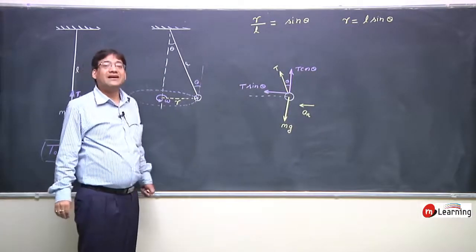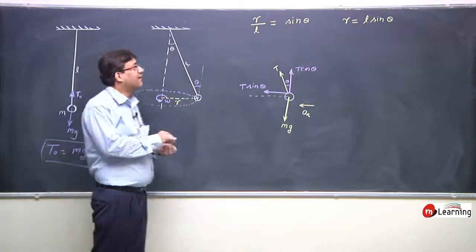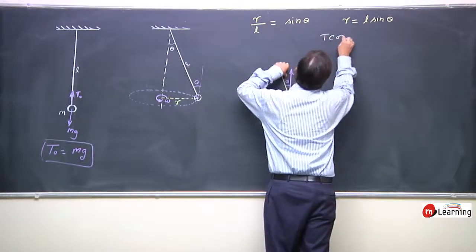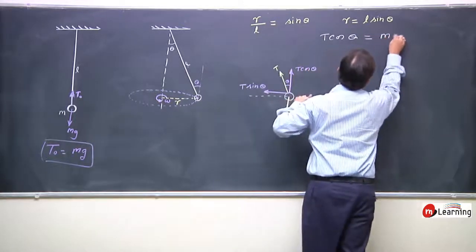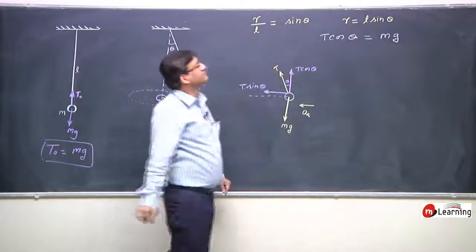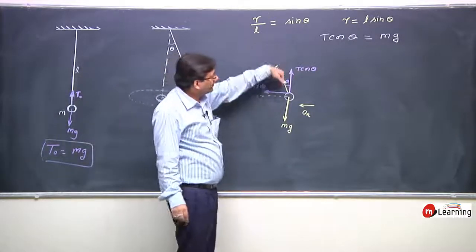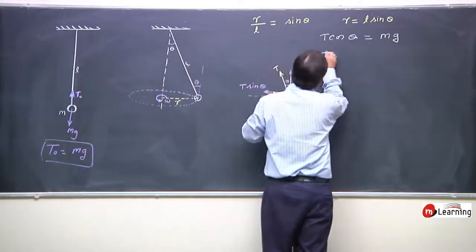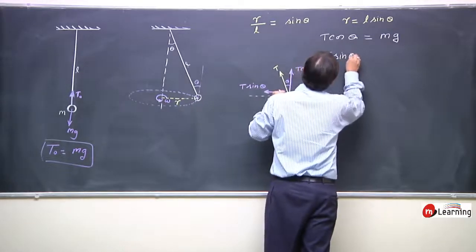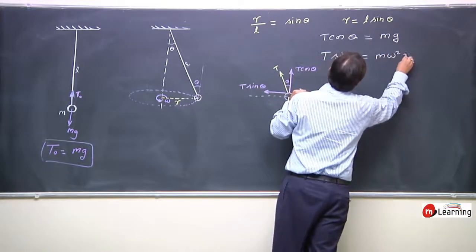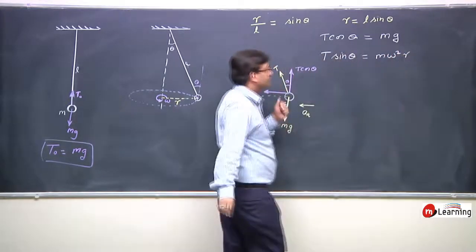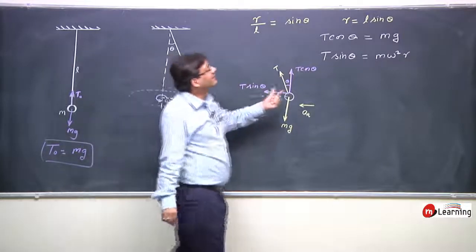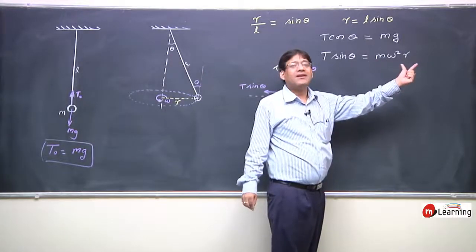Writing the equation of dynamics: T cos θ equals mg — the vertical component balances the weight. And T sin θ provides the necessary centripetal force, equal to m omega squared R.